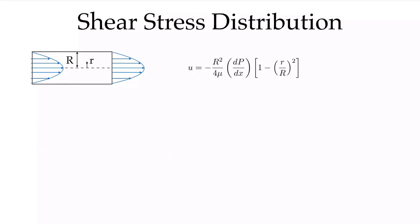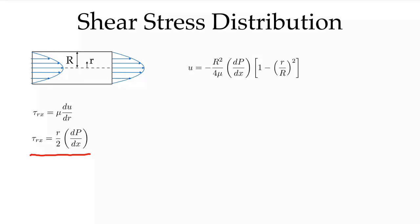Finally, we can look at one more thing: the shear stress distribution, obtained by manipulating our velocity profile. The shear stress τ_rx — the shear stress in the x-direction on an r-plane — is given by μ du/dr. So we multiply by μ and take the derivative of our velocity profile to see that the shear stress distribution is r/2 times dp/dx. This means the shear stress is 0 at the center (r = 0), and it increases linearly to a maximum value at the wall.